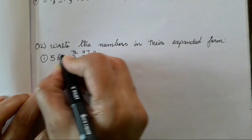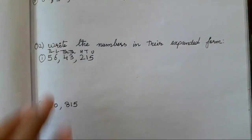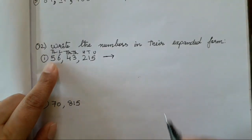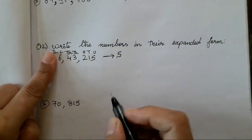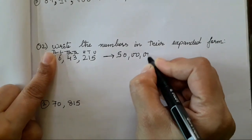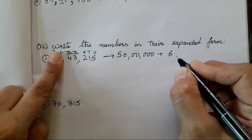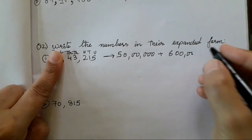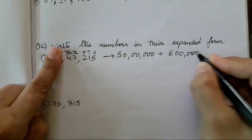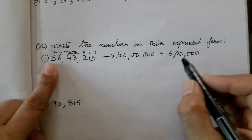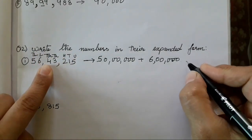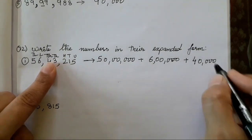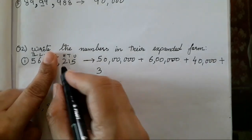Write the numbers in the expanded form — it's also very easy. Same as we did before: thousand, ten thousand, lakh, and ten lakh. Now we have to write the expanded form the same as question number one, but here we have to put a plus sign between the numbers. First take five, put a finger — add that many zeros — plus next number is six, take six, put a finger, write remaining zeros. So we have six lakh, forty thousand.